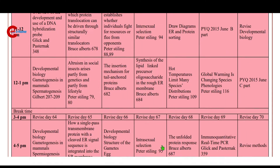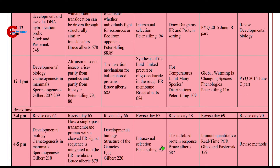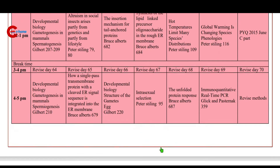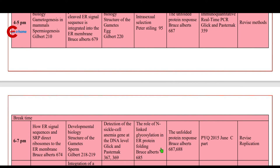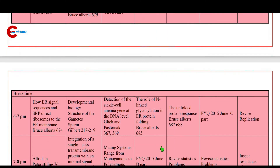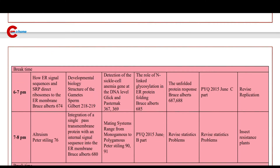4 to 5 p.m.: intersexual selection. Then 6 to 7 p.m.: the role of N-linked glycosylation in endoplasmic reticulum protein folding. Study from Bruce Alberts, page number 685.